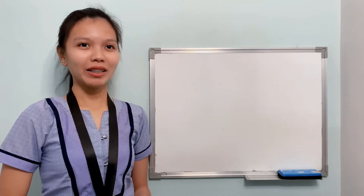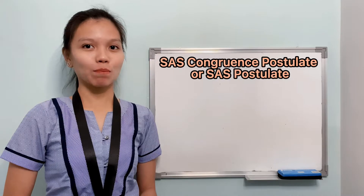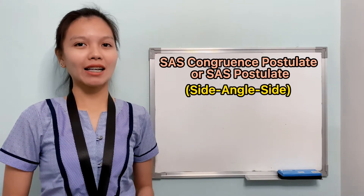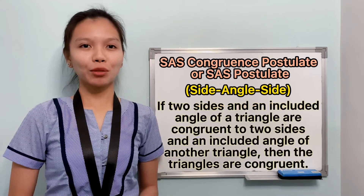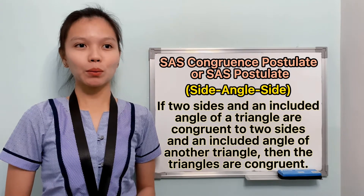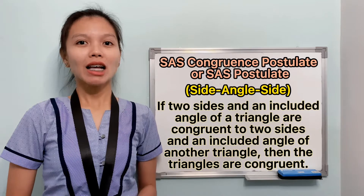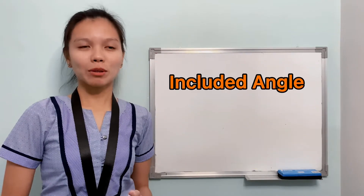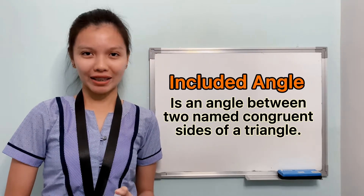Let us start with the SAS congruence postulate, or simply the SAS postulate. SAS stands for side, angle, side. This postulate states that if two sides and an included angle of one triangle are congruent to two sides and the included angle of another triangle, then the two triangles are congruent. The included angle of a triangle is an angle between the two named congruent sides of a triangle.